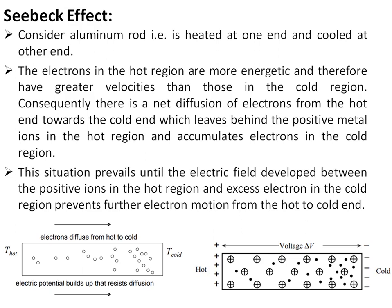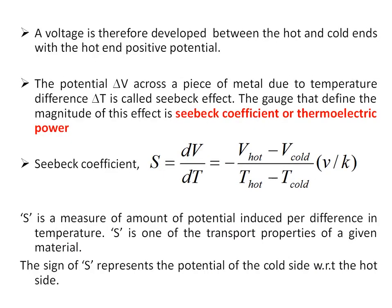This electron movement from hot end to cold end creates an electric field, which prevents the further diffusion of electrons into the cold region. A voltage is therefore developed between the hot and cold ends, with the hot end at positive potential and the cold end at negative potential for aluminum. The potential ΔV across a piece of metal due to the temperature difference ΔT is called the Seebeck effect, and the quantity that defines the magnitude of this effect is the Seebeck coefficient, also known as thermoelectric power.